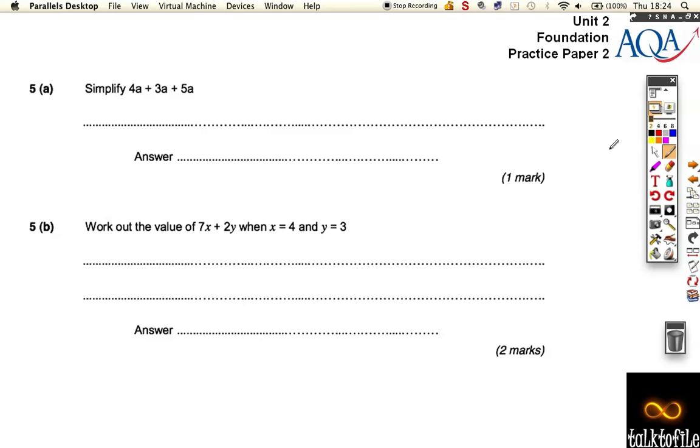Right, question 5 on this asks us to simplify this. Well, this is really easy. If we've got 4a and 3a plus 5a makes 7a, makes 12a overall. A most straightforward mark.